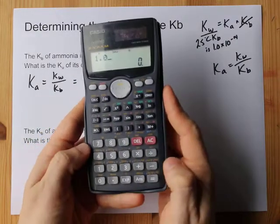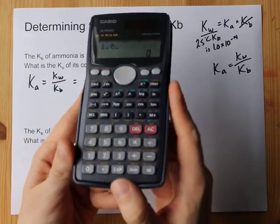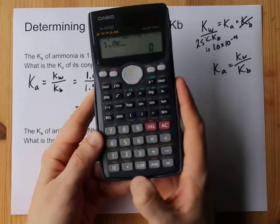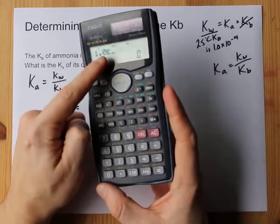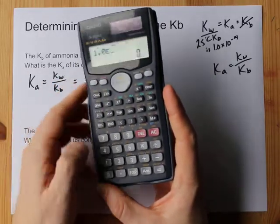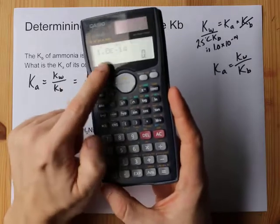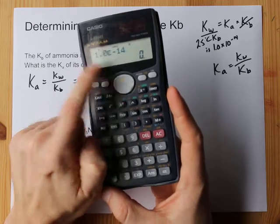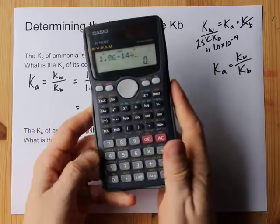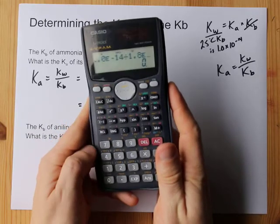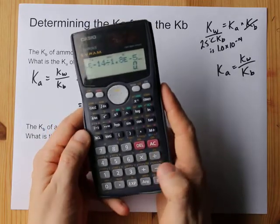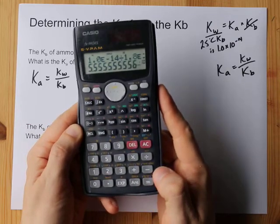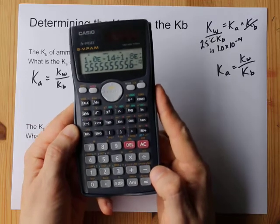Now 1.0 exp is my button. It might say ee on yours or times 10 to the power of, but that e that appears means times 10 to the power of. Then all I have to type is negative 14. 1.0 times 10 to the power of negative 14. Divided by 1.8 times 10 to the power of negative 5. This calculator will do all that scientific notation work for me. 5.555 times 10 to the negative 10.